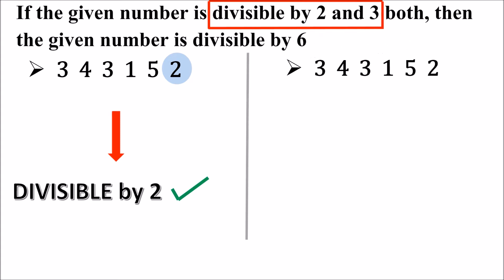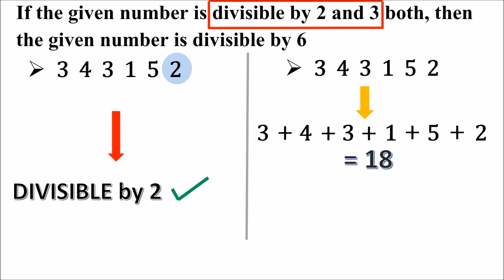Is this number also divisible by 3? To know whether this number is divisible by 3 or not, we need to find out the sum of all the digits. The digits in this number are 3, 4, 3, 1, 5, and 2. So 3 plus 4 is 7, 7 plus 3 is 10, 10 plus 1 is 11, 11 plus 5 is 16, and 16 plus 2 is 18. The sum of all the digits is 18, and 18 is divisible by 3. So the given number is divisible by 3.